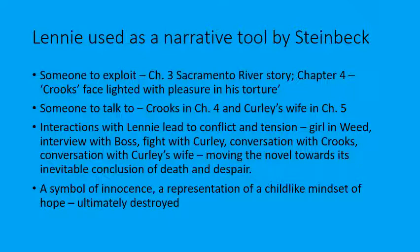Number three: look at the interactions Lennie has with others — a lot of them lead to conflict and tension. The interaction with the girl in Weed, the interview with the boss, the fight with Curley which is sort of the beginning of the end, the conversation with Crooks which almost results in Lennie assaulting him, and the conversation with Curley's wife which in effect causes the death of the dream. Any interaction involving Lennie leads to conflict and tension, and Steinbeck uses those moments to move the novel forward towards its inevitable conclusion of death and despair.